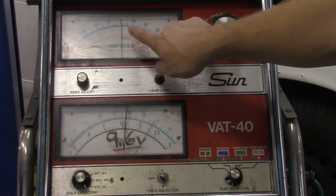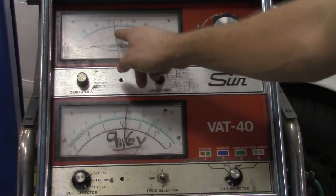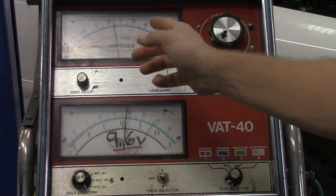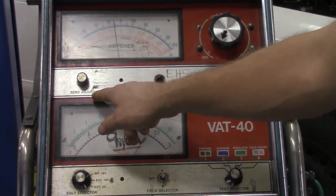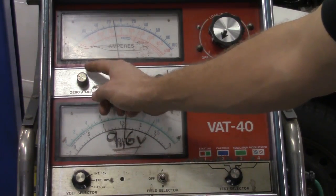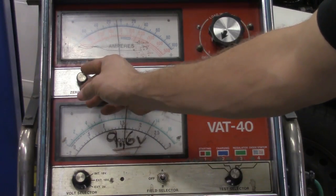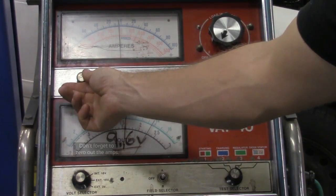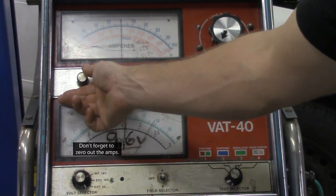Now what we also want to take a look at is my amp gauge right here. What can happen is sometimes this needle will be deflected off to the left or it'll be deflected off to the right. If that's the case, we have to zero it out. We got the zero adjust right here. All you have to do is turn this dial in the direction that you want the needle to travel to get to zero. In this case, I'm going to turn it clockwise until that needle points directly at zero.